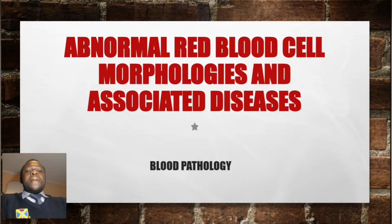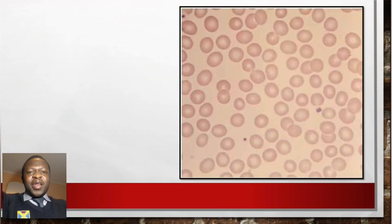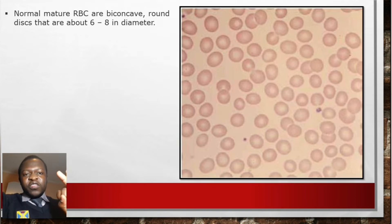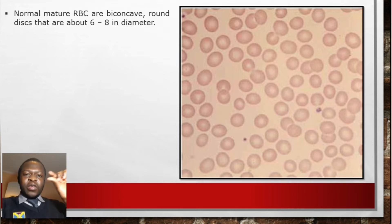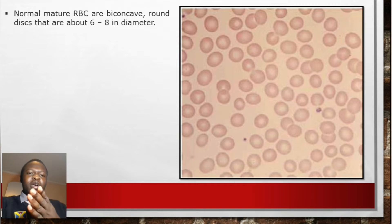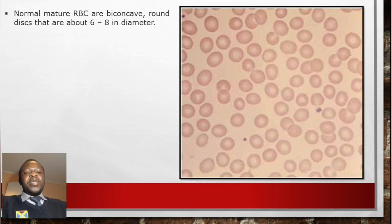Before that, we have to start with a normal RBC morphology. The normal structure of RBCs is a biconcave, round disc — shaped like a dumbbell where the center is thin and the periphery is a little bit thicker. Their average diameter is 7.2 micrometers, but we'll use the range of 6 to 8 micrometers.